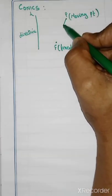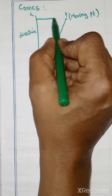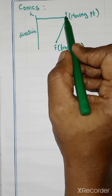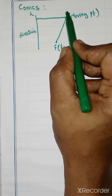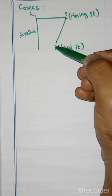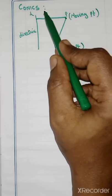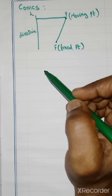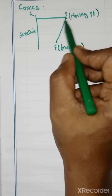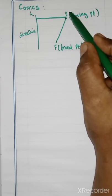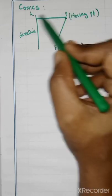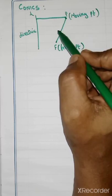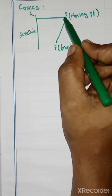Now we join the fixed line and the moving point. What is a conic? If a point moves in a plane such that its distance from a fixed point bears a constant ratio to its perpendicular distance from a fixed straight line, then the path described by the moving point is called a conic.